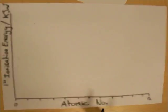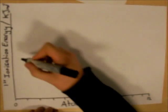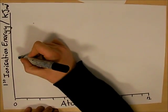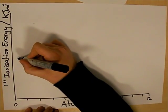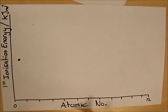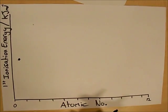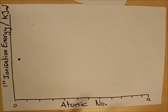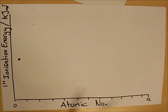The first element has atomic number 1 and has a relatively high first ionisation energy because it has no shielding and the electron is very close to the nucleus. This means a lot of energy is required to remove the first electron.